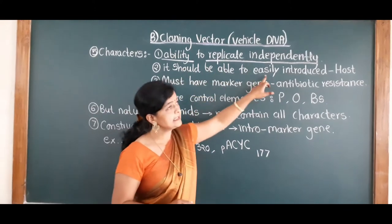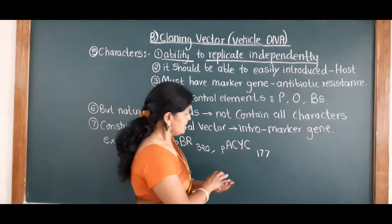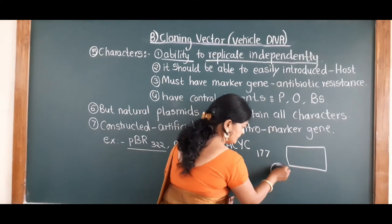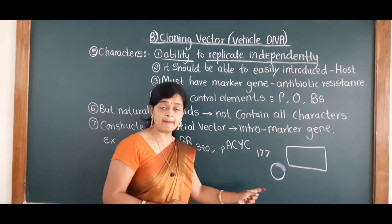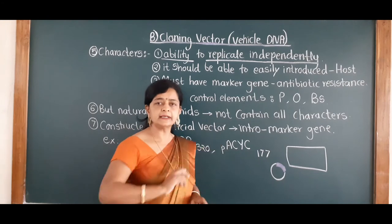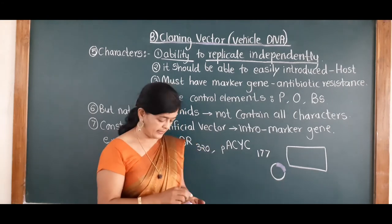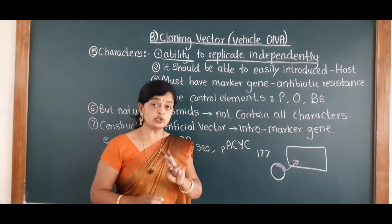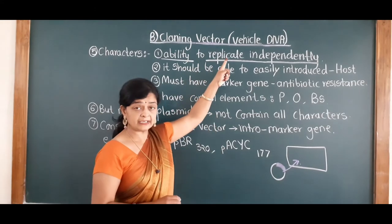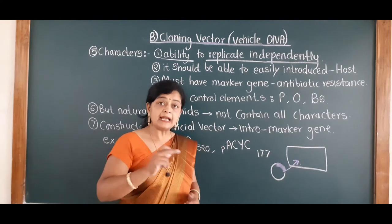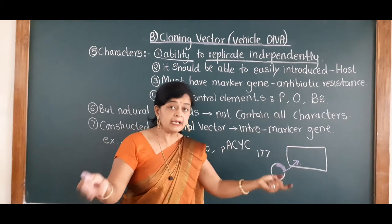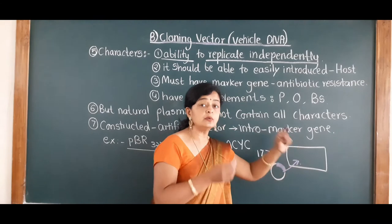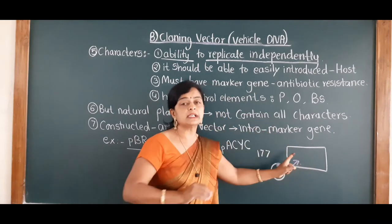The second characteristic is: the vector should be able to be easily introduced inside the host. Suppose this is the bacterial cell and this is the vector — this vector should have the capacity to enter the host cell. Sometimes a vector may not enter inside the host cell at all. So we want a vector which should be able to be easily introduced inside the host cell. The more they replicate, the more we will get the desired gene.